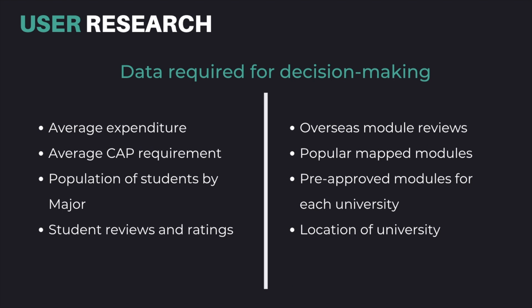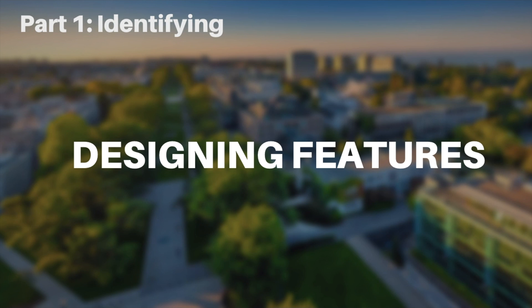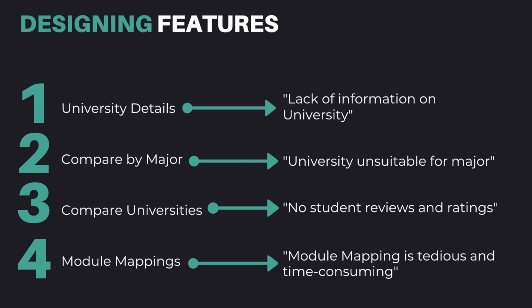Using the user feedback we received, we identified the data that students require in their decision-making process. Secondly, we went on to designing features to solve the problems faced by our users in the first round of user feedback. In our Clickable prototype, we came up with four features, each feature solving a specific problem faced by our users.